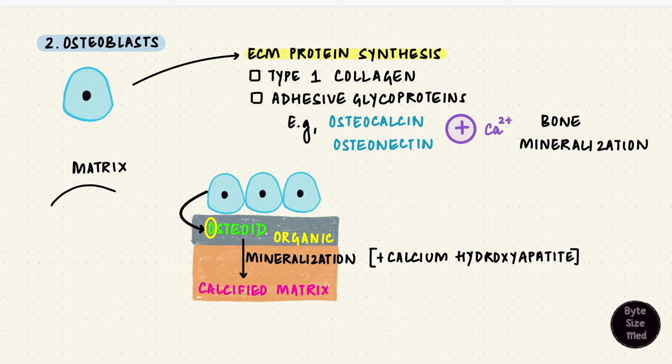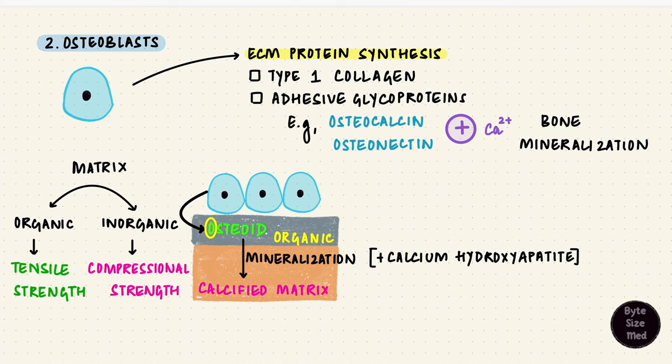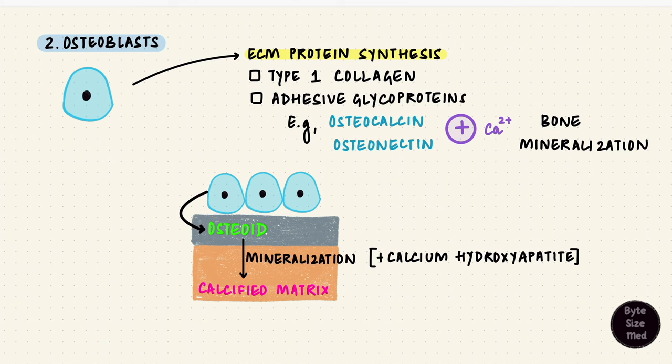The bone matrix has both organic and inorganic components. The organic part of the bone matrix gives it tensile strength. The inorganic part gives it compressional strength so they're both important for bone strength. Osteoblasts are the ones that synthesize all the proteins for the extracellular matrix. That's basically the osteoid so osteoblasts synthesize the osteoid. This process of mineralization is also regulated by the osteoblasts.